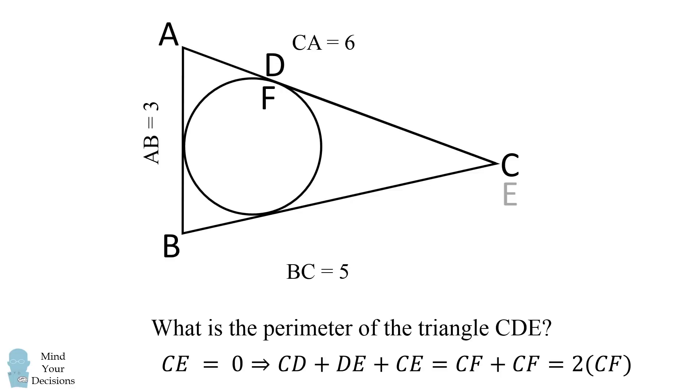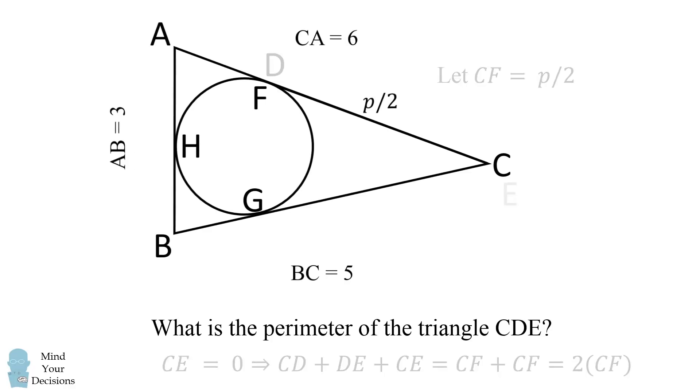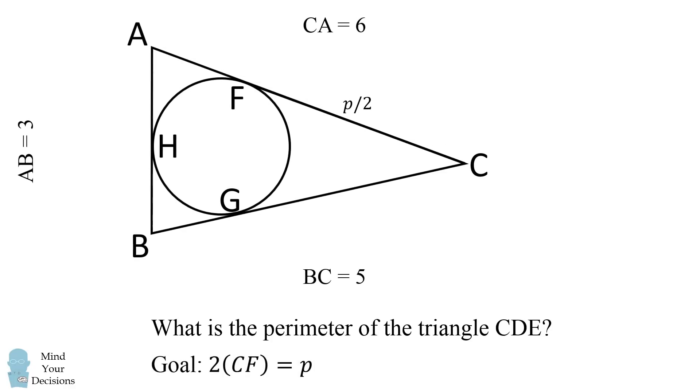Now how can we solve for 2 times CF? Well, let's let CF be equal to P over 2. This is because it's the perimeter over 2. Now let's label our tangent points of the in-circle as G and H. And now what can we do from here? Well, by the principle of equal tangents, CG will also be equal to P over 2.